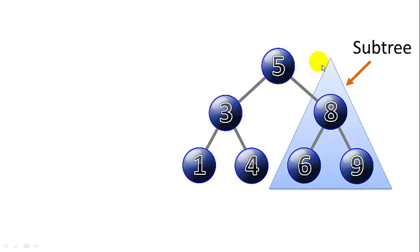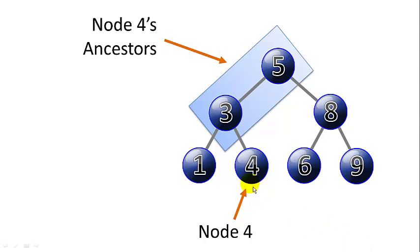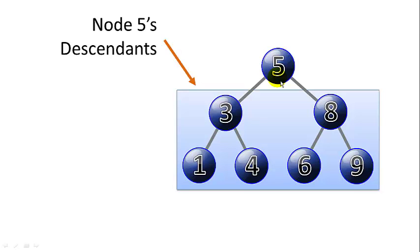Node 5's right subtree includes everything in this triangle, which is a tree in itself under node 5. Node 5's left subtree includes nodes 3, 1, and 4. Node 4 has ancestors, which are simply every node between itself and the root node. And node 5 has descendants, basically every node below it, all of its children's nodes and their children's nodes and so on.